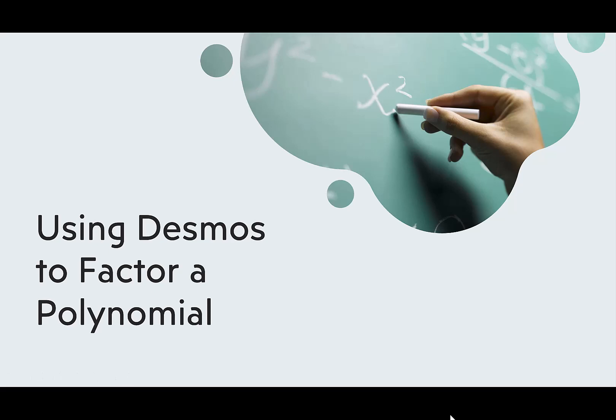Today I'm going to talk about using Desmos to factor a polynomial. When we're looking for our rational roots, we're using technology to find out which ones give us zeros. So the question is, couldn't we just look at the graph and see the zeros and factor from there? And my answer is, sort of.